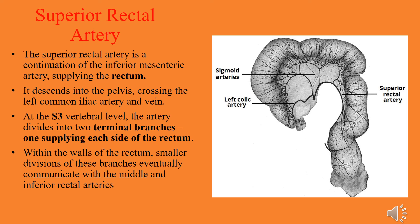Superior rectal artery is the continuation of the inferior mesenteric artery and supplies the rectum. It descends into the pelvis, crossing the left common iliac artery and vein. At the S3 vertebral level it divides into two terminal branches, one on each side of the rectum — left branch on the left and right branch on the right. Within the walls of the rectum, smaller divisions of these branches eventually communicate with the middle and inferior rectal arteries.